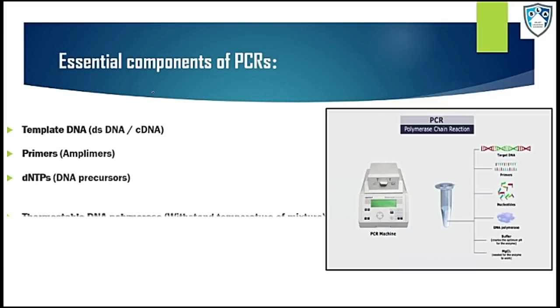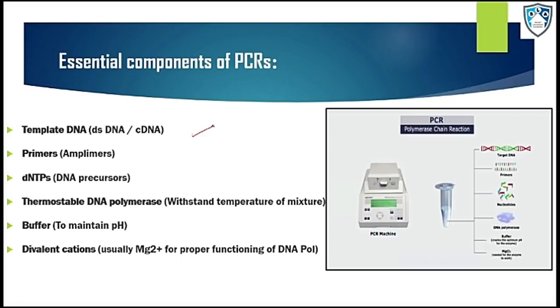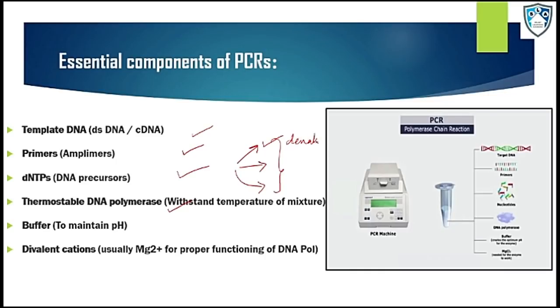The essential components of PCR are: the template DNA, which can be double-stranded DNA or cDNA (complementary DNA); the primers, also known as amplimers; the dNTPs, which are the DNA precursors; and the thermostable DNA polymerase. The PCR involves three reactions carried out in a stepwise manner, and the first reaction is denaturation, which is carried out at a higher temperature. To withstand such temperature we need thermostable DNA polymerase. Additionally, we need a buffer and divalent cations.